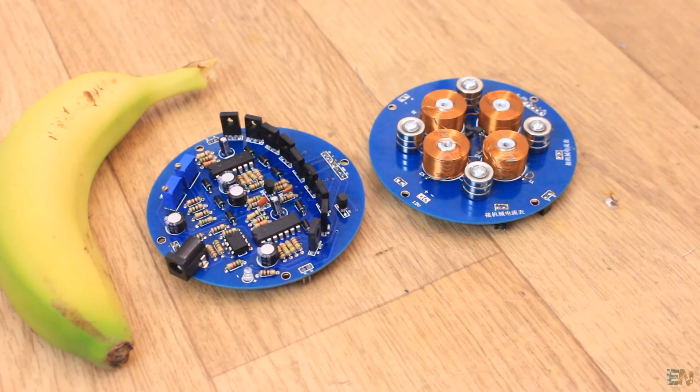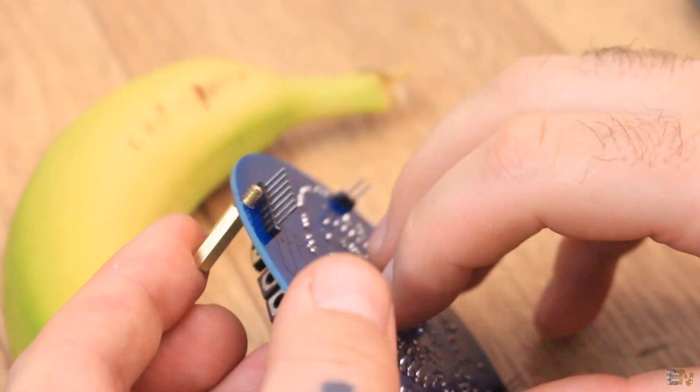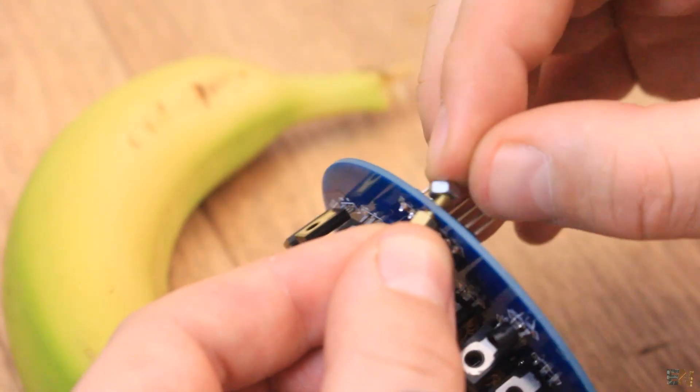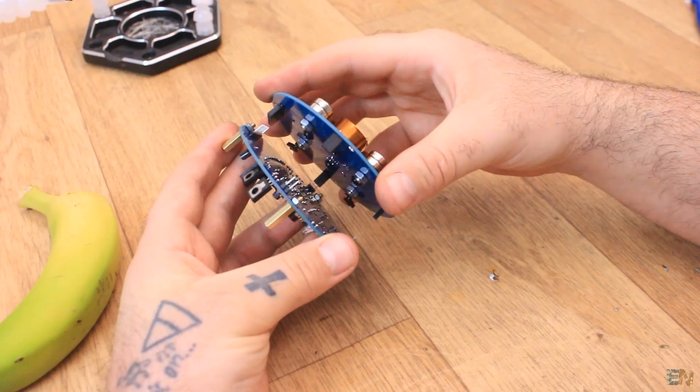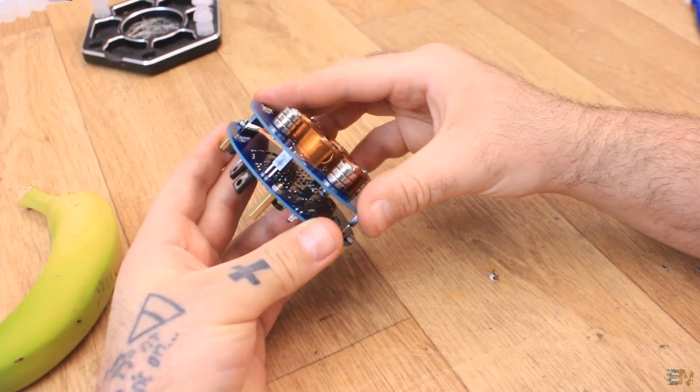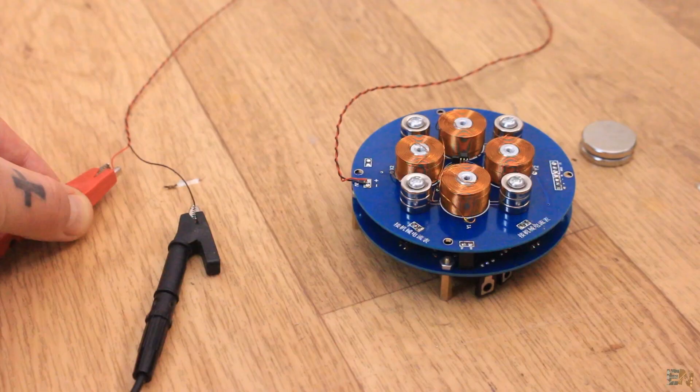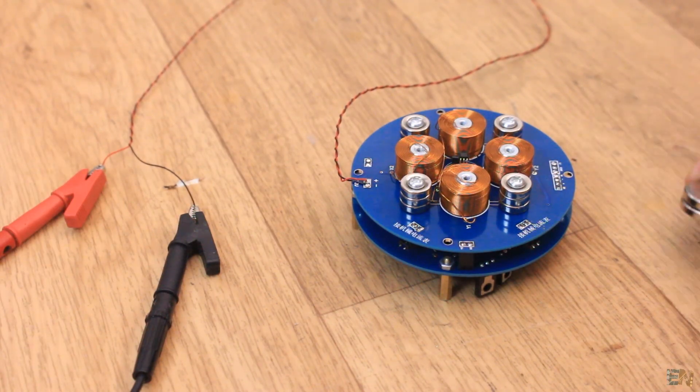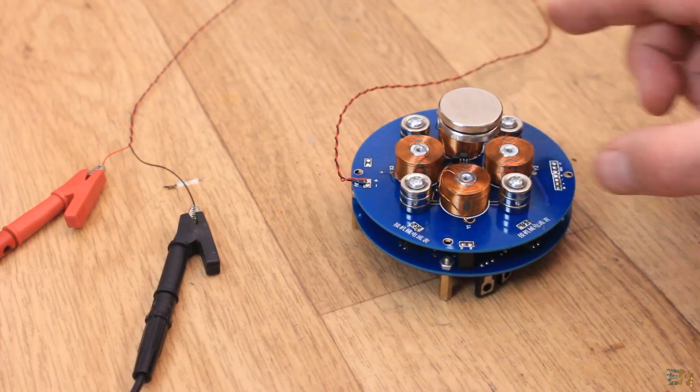I add the screws as feet on the bottom PCB and then place the second PCB on top. Now the levitator should be ready, but we might need to calibrate it. For that I connect 12V at the input and power on the module. I place the levitation magnet on top. There is no need for tuning, the levitator works.